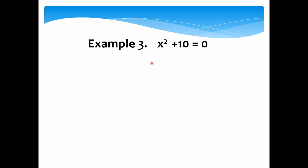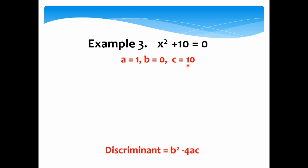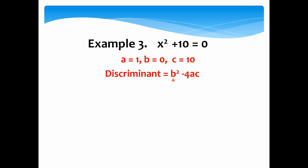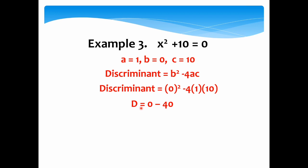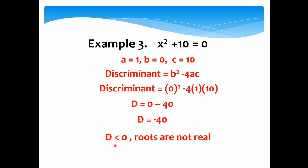Let's proceed to example 3. We are given x squared plus 10 equals 0. The value of a is 1, b is 0 because we don't have a term with a linear degree, and c is 10. For the discriminant, b squared minus 4ac gives us 0 squared minus 4 times 1 times 10. Simplifying, d equals 0 minus 40, which is negative 40. Since the discriminant is less than 0, the roots of the quadratic equation are not real.